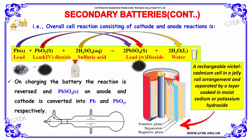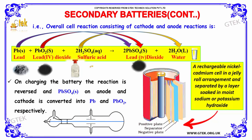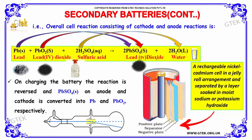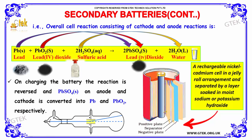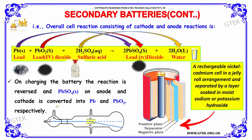Lead on reaction with lead dioxide and sulfuric acid gives lead sulfate — note: this is lead sulfate, not lead dioxide, there is a small correction — plus water. On charging the battery, the reaction is reversed, and PbSO4 at the anode and cathode is converted into Pb and PbO2 respectively.